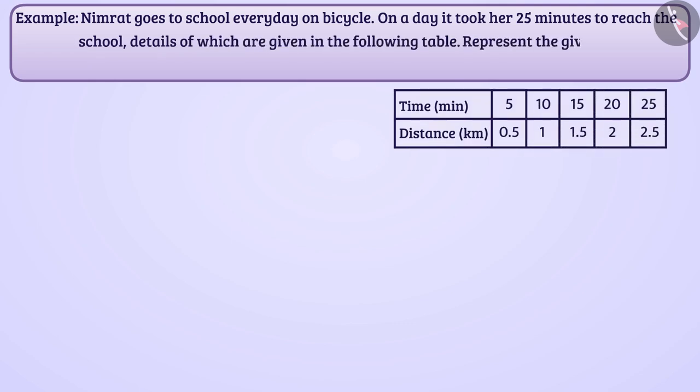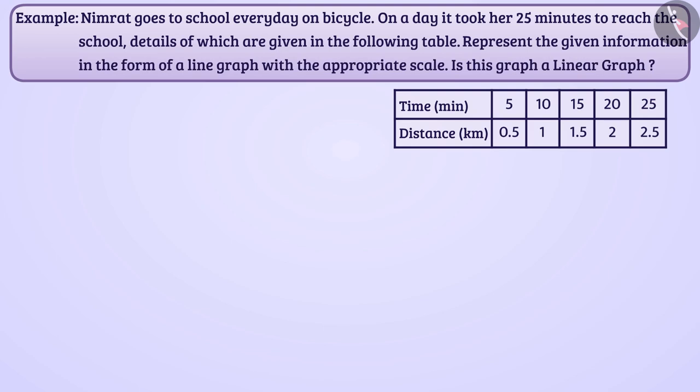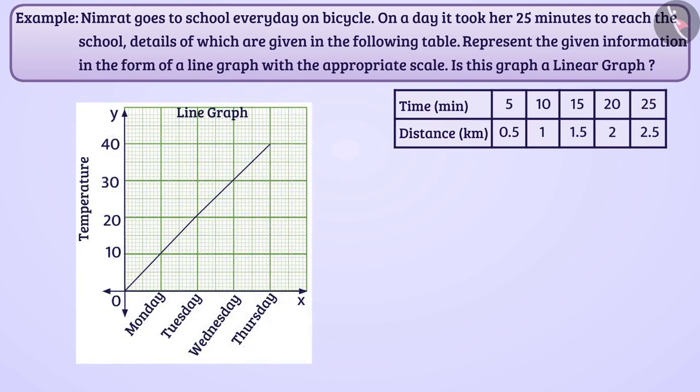Represent the given information in the form of a line graph with appropriate scale. Is this graph a linear graph? A line graph represents data that change continuously over time. Data is displayed by dots or points in the graph. All points are joined by line segments.